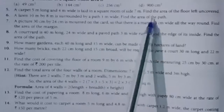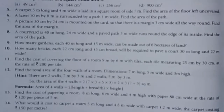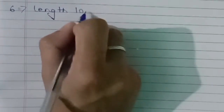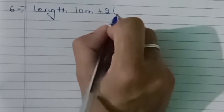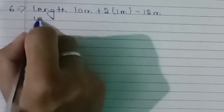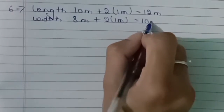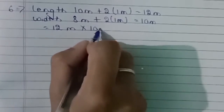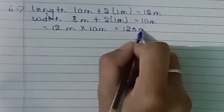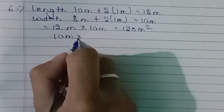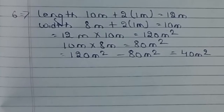Question 6. A lawn 10 mm by 8 mm is surrounded by a path 1 mm wide. Find the area of the path. Outer length = 10 + 2×1 = 12 mm; outer width = 8 + 2×1 = 10 mm. Area of path = 12 × 10 − 10 × 8 = 120 − 80 = 40 mm².